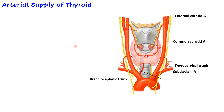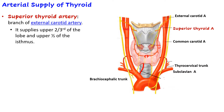The first artery supplying the thyroid gland is the superior thyroid artery. This is a branch of the external carotid artery — in fact, the first anterior branch of the external carotid artery. It supplies the upper two-thirds of the lobe and the upper half of the isthmus.